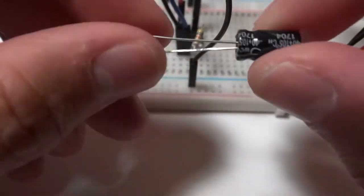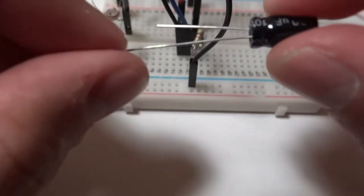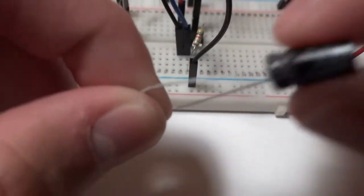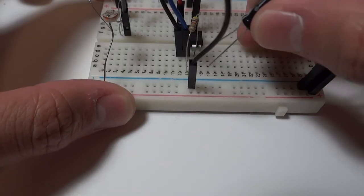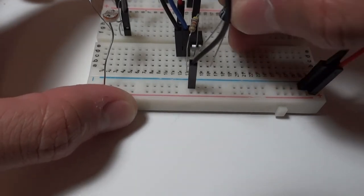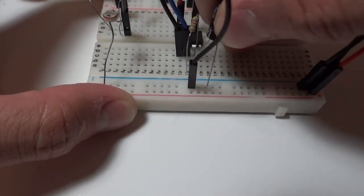Now we're going to connect the capacitor. These kind of capacitors have polarity, meaning that one side is positive and the other side is negative. You can also see the indication of the negative side on the capacitor itself. Take the capacitor and connect the positive side to pin 2 and the negative side to ground.